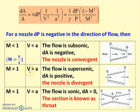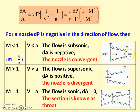When Mach number M > 1, the velocity is greater than acoustic velocity and the flow is supersonic. Substituting, the bracket becomes negative and with dP negative, the right-hand side becomes positive, so dA is positive — the area is increasing — making it a divergent nozzle. When M = 1, that is V = A, the flow is called sonic flow, dA = 0, and this section is called the throat. In steam turbine applications, we normally use a converging nozzle or converging-diverging nozzle.